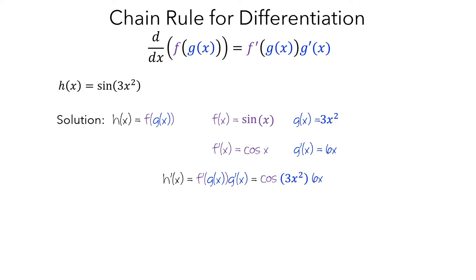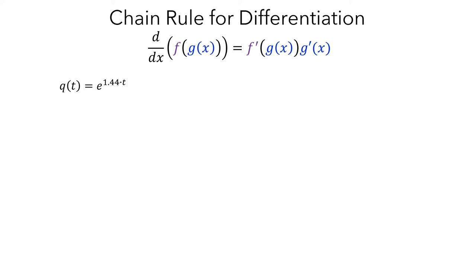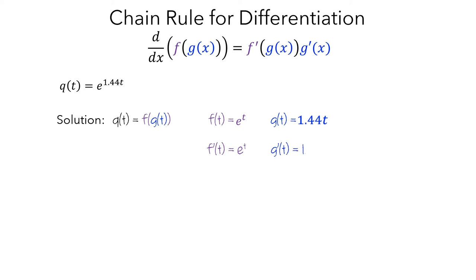Now let's look at the second example. Let q be an exponential function in terms of t. We need to write q as a composition f. Here, f, the outside function, is e to the t, and g, the argument, is 1.44 times t. Next, we need to find the derivatives of the outside function and the argument. The derivative of e to the t is e to the t, and the derivative of 1.44t is just 1.44. Putting this together with the chain rule, we take the derivative of the outside function, plug in the argument, and then multiply by the derivative of the argument.